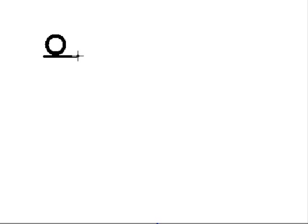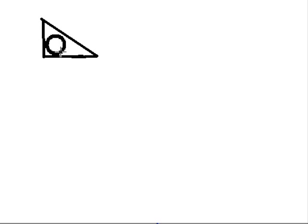So what do I got here? Looks to me like I got a circle. What can I do with this circle? I can draw a line like this, and I can draw a line like this, and I can draw a line like that, and pretty much make a triangle.